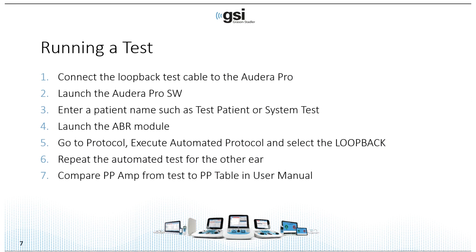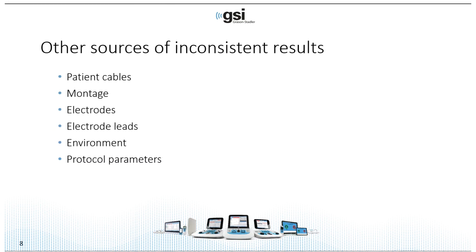To review: connect the loopback test cable to the Audera Pro, launch the software, and optionally enter a patient name. Launch the ABR module and go to Protocol > Execute Automated > Loopback. Let the test complete in channel A, then switch to channel B (left ear) and repeat. Finally, compare the peak-to-peak amplitude values from the results to the table in the user manual. If everything is normal, look for other sources of inconsistent test results.